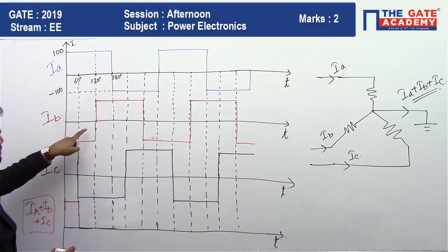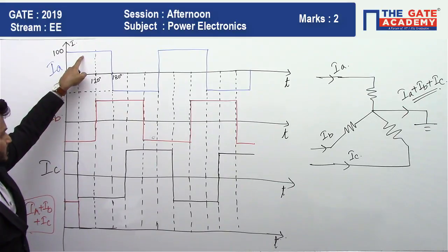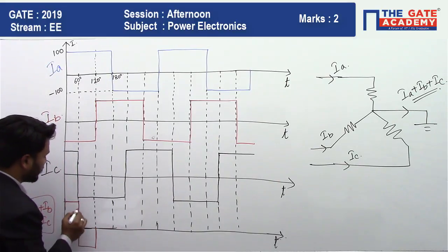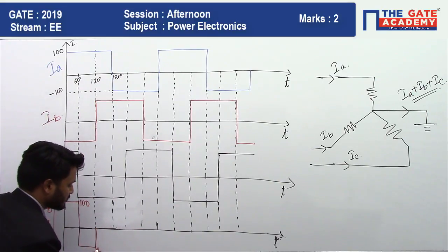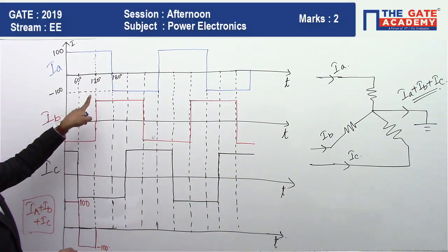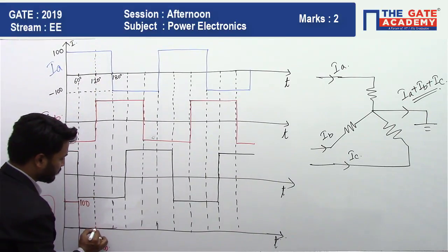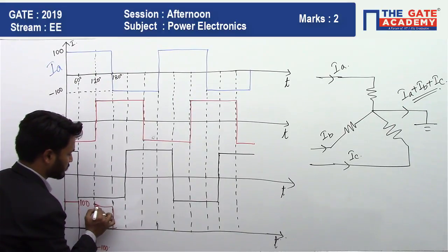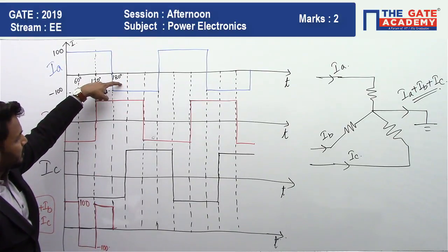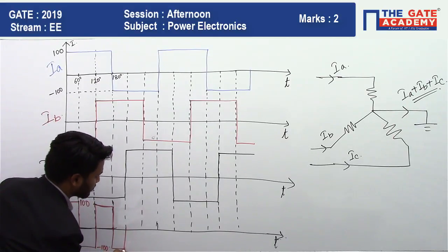At 60, again, the scenario changes. See here, this is minus 100, this is minus 100, and this is plus 100. Plus 100, minus 100, minus 100. You are left with minus 100, right? This is plus 100 and this is minus 100, right? So after 120, let us see the case. This is plus 100, this is plus 100, this is minus 100, which means effectively it is plus 100 minus 100. Therefore, effectively it is going to be minus 100, right?